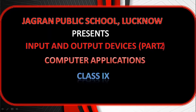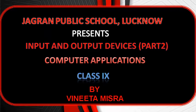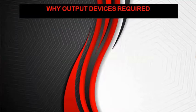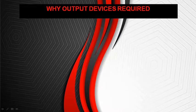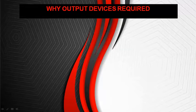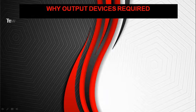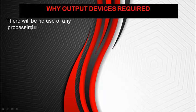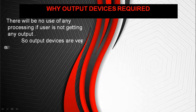Hello everyone, welcome to another session of Input and Output Devices. In the previous video, we discussed input devices. In this video, we are going to cover output devices. But before discussing output devices, we will know why output devices are required. We know that our computer works in three stages: input, processing, and output. There will be no use of any processing if the user is not getting any output. So output devices are a very essential part of computer systems.